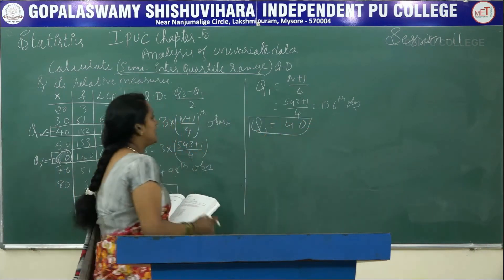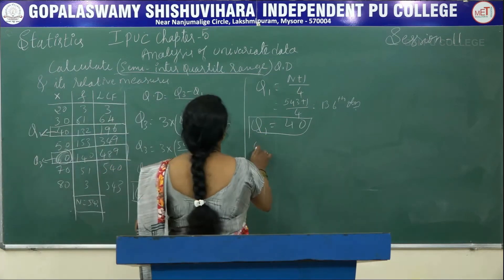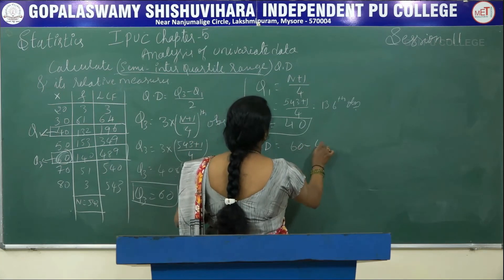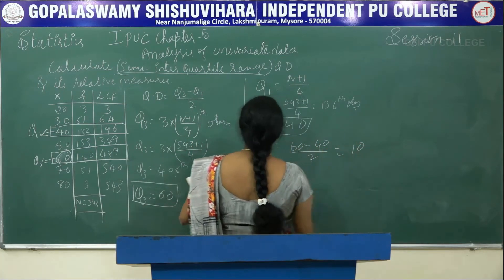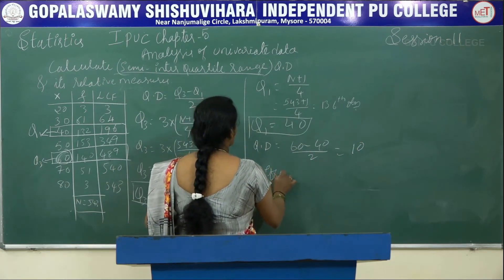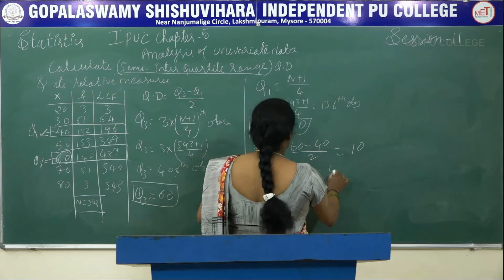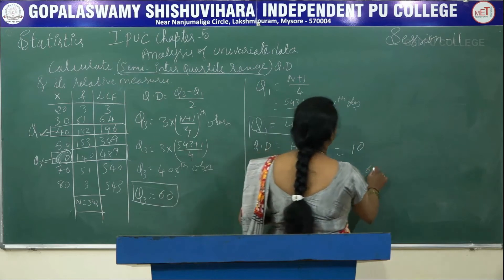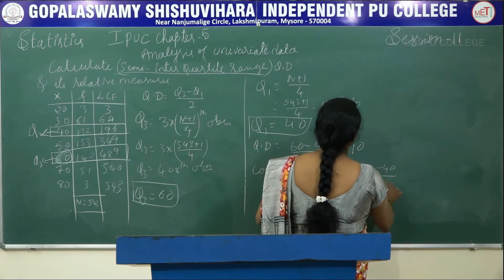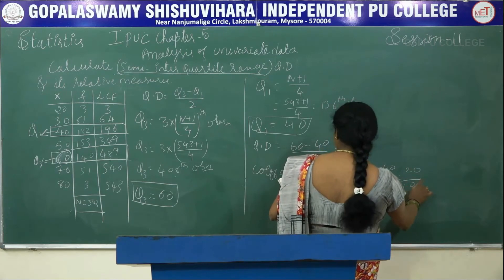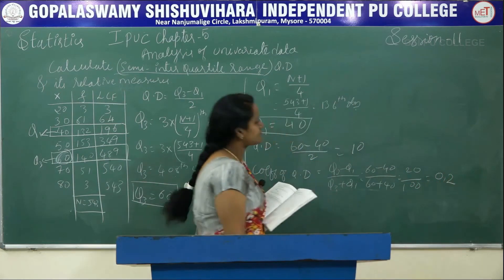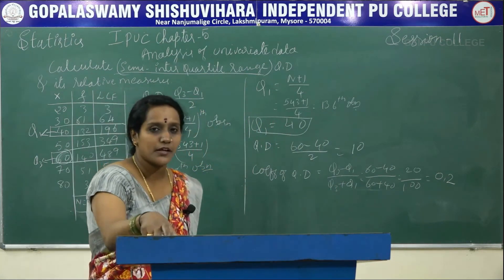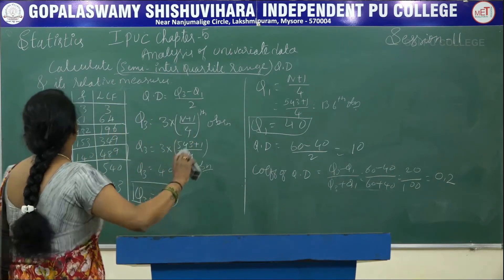Q1 is 40 and Q3 is 60. Now find QD and its coefficient. QD is equal to 60 minus 40 divided by 2, which is 10. Coefficient of QD is Q3 minus Q1 divided by Q3 plus Q1, which is 60 minus 40 by 60 plus 40, giving 20 by 100, equal to 0.2. We have calculated QD and coefficient of QD for the discrete case.